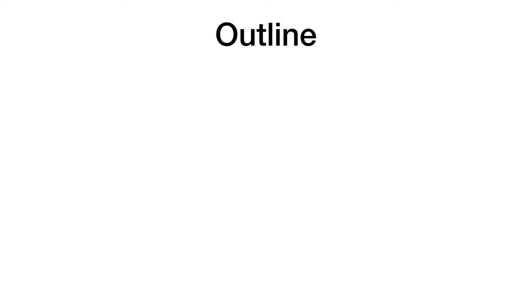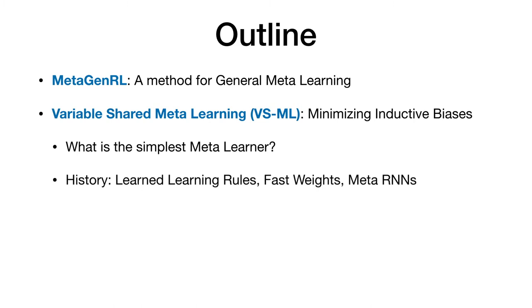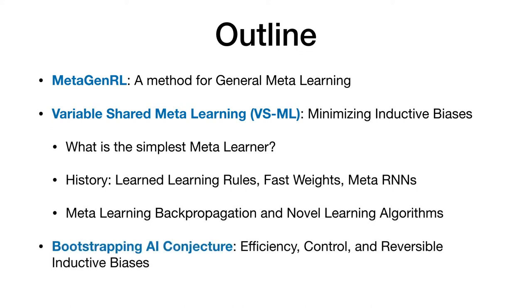So before we dive right in, I will give you a quick overview for what to expect. We will begin exploring general meta-learning with my work on meta-general. I will then introduce my latest work, variable shared meta-learning, which aims at minimizing inductive biases while producing powerful general learning algorithms. To motivate this approach, we will ask ourselves, what are the necessary inductive biases for meta-learning in what would be the simplest meta-learner? To answer this question, we will look back at the history of meta-learning, learned learning rules, fast weights, and meta-RNs. We will show how variable shared meta-learning can learn to do backpropagation and invent novel learning algorithms from scratch. And finally, we will look at the bigger picture of general meta-learning and AI generation, something I call the bootstrapping AI conjecture.